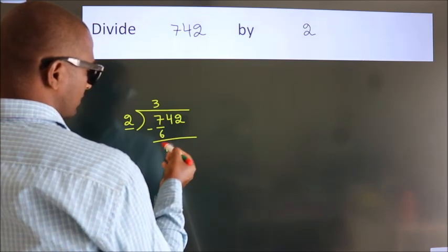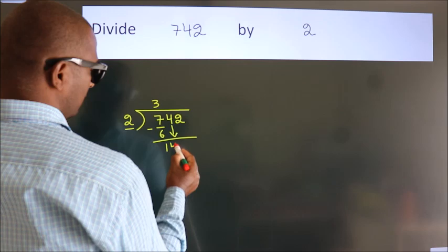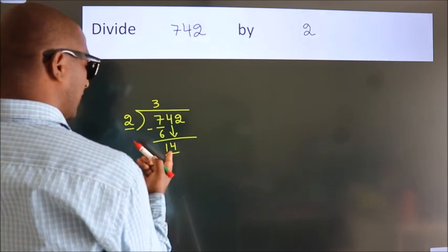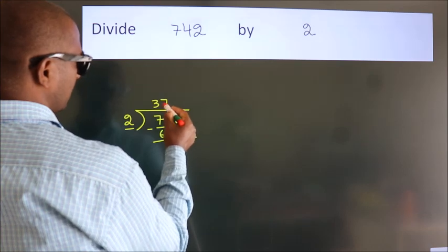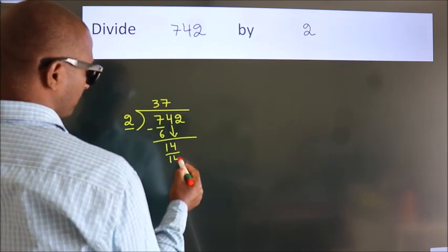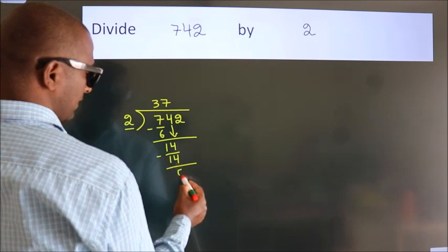After this, bring down the beside number. So 4 down, so 14. When do we get 14? In 2 table. 2 times 7 is 14. Now we subtract. We get 0.